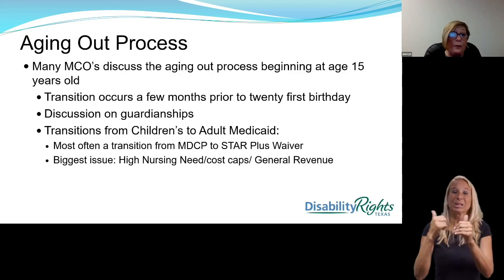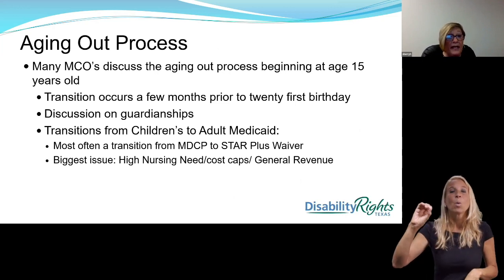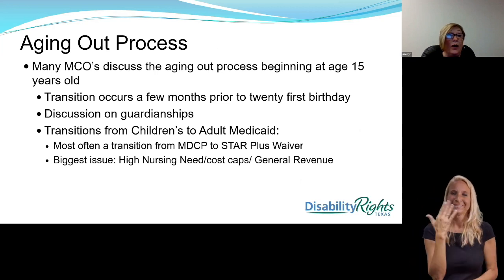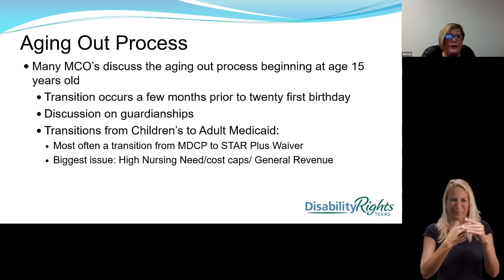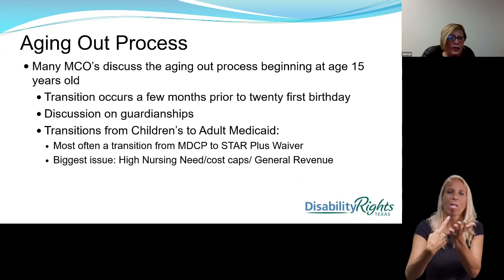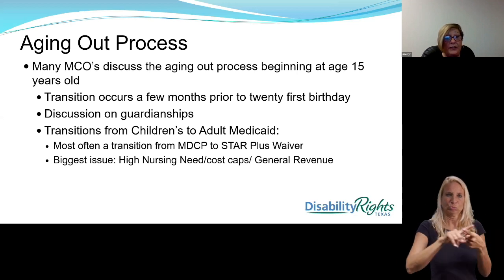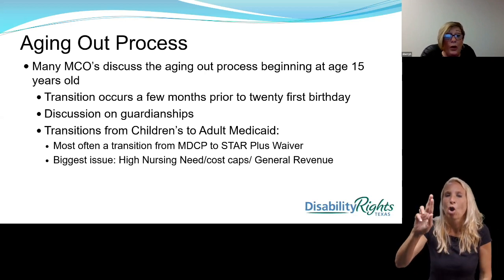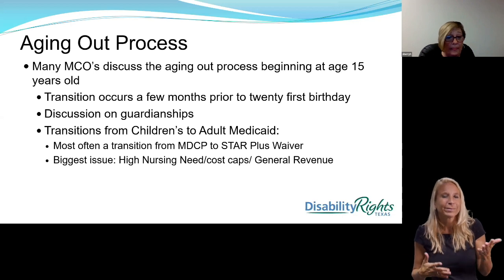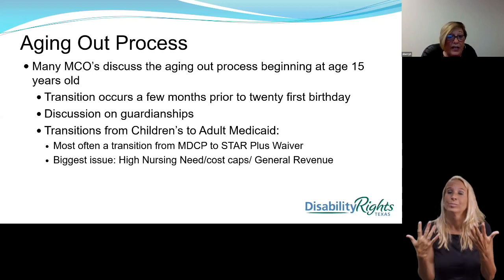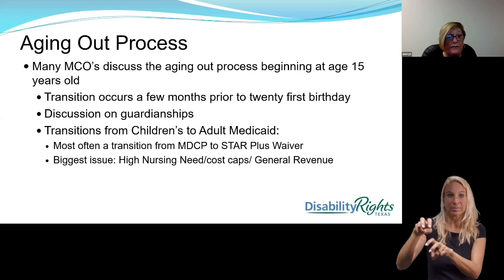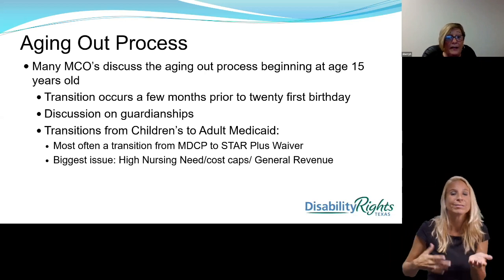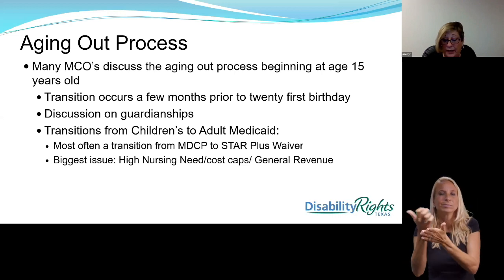There is an aging out process with the MDCP waiver, and many MCOs discuss it beginning at age 15, although transition occurs a few months prior to the 21st birthday. There's discussion on guardianship and transition from children's Medicaid to adult Medicaid. Most often, a transition from MDCP will go to the STAR Plus HCBS waiver. The biggest issues seen through the aging out process are high nursing needs, cost caps, and general revenue.